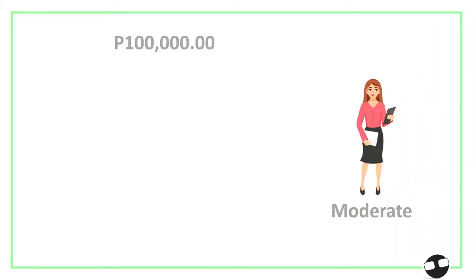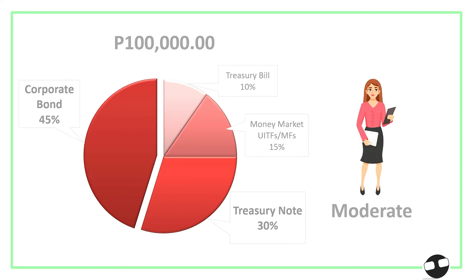If you are a moderate investor, you can build your portfolio looking at bonds. For example, 45% in corporate bonds and another 30% in treasury notes, so your total bond exposure would be 75% (75,000) of your 100,000. Then 10% in treasury bills and 15% (15,000) in money market UITFs and mutual funds — so that at least you have something you can withdraw anytime for emergency needs.